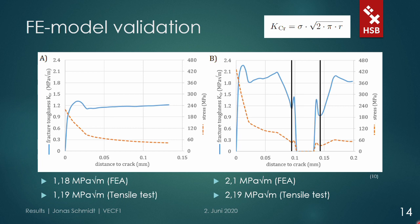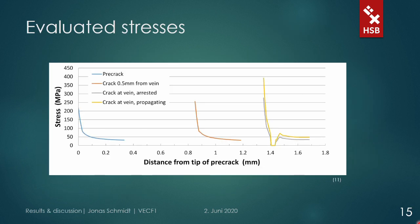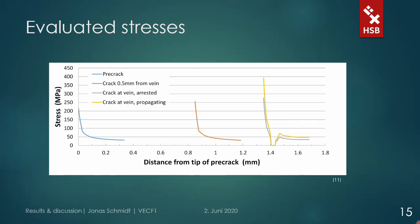To get an idea of how the crack growth was simulated, this graph shows exemplary for the first sample which steps were analyzed. First the pre-induced crack, similar to what was shown on the previous slide. The next steps are plotted against the distance from the pre-crack to indicate position in the sample. The orange line indicates the crack length where the crack was still propagating, about 0.5 mm from the vein. The last two evaluations are directly at the vein — once when the crack was stopped by the vein, and once with a displacement that caused the vein to fail.